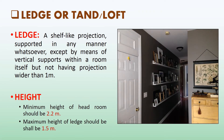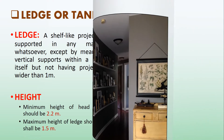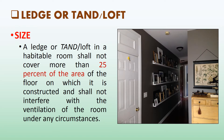We will now see requirements of ledge or loft. First, understand what ledge means. A ledge is a shelf-like projection, supported in any manner whatsoever, except by means of vertical supports within a room itself, but not having a projection wider than 1 meter. The minimum headroom of a ledge or loft shall be 2.2 meters, and the maximum height of the loft shall be 1.5 meters. A ledge or loft in a habitable room shall not cover more than 25% of the area of the floor on which it is constructed, and shall not interfere with the ventilation of the room under any circumstances.